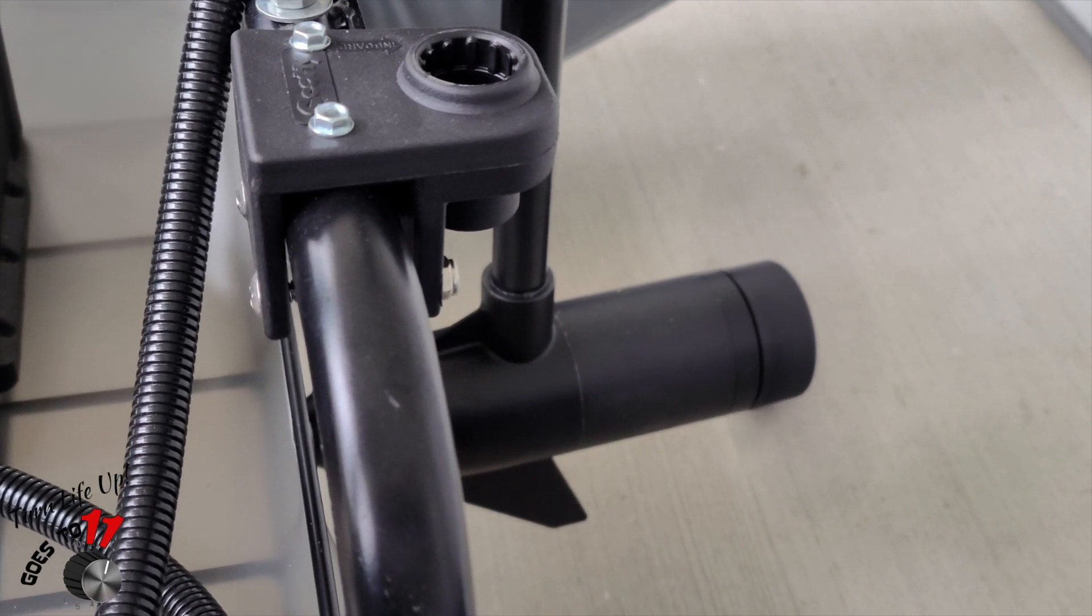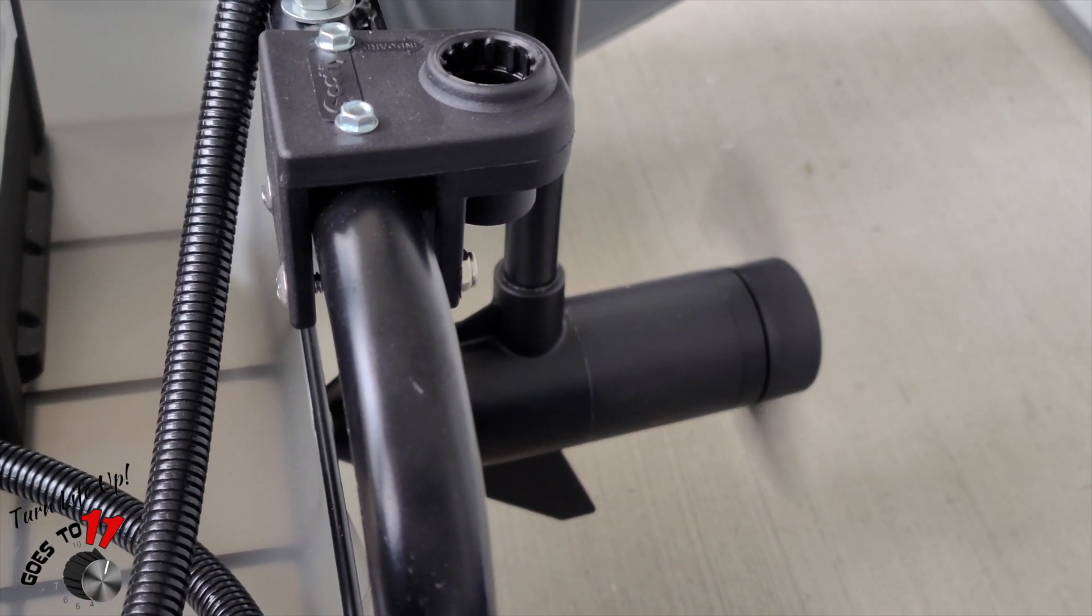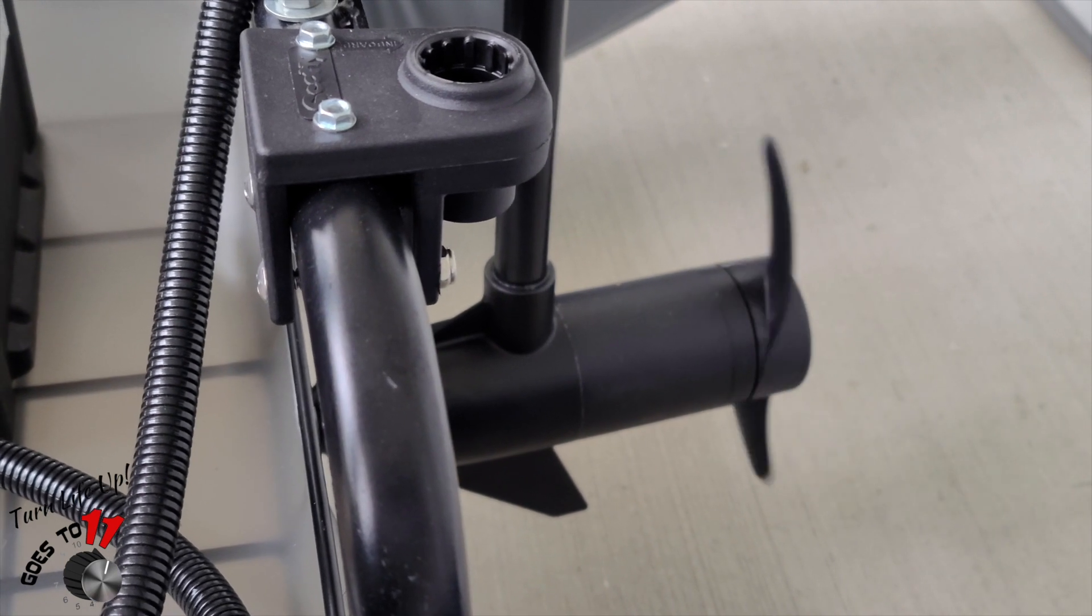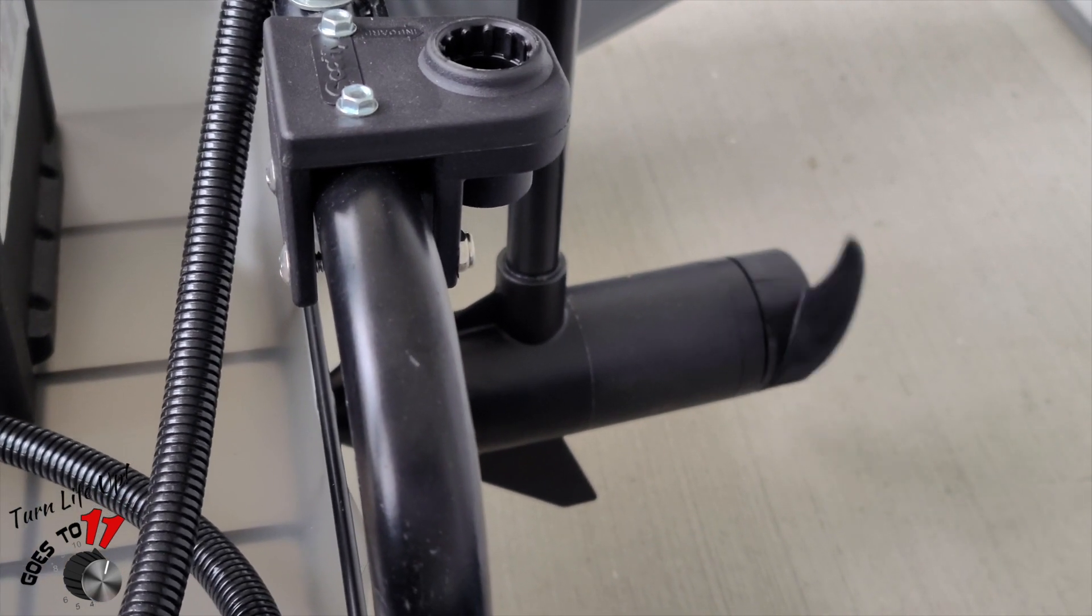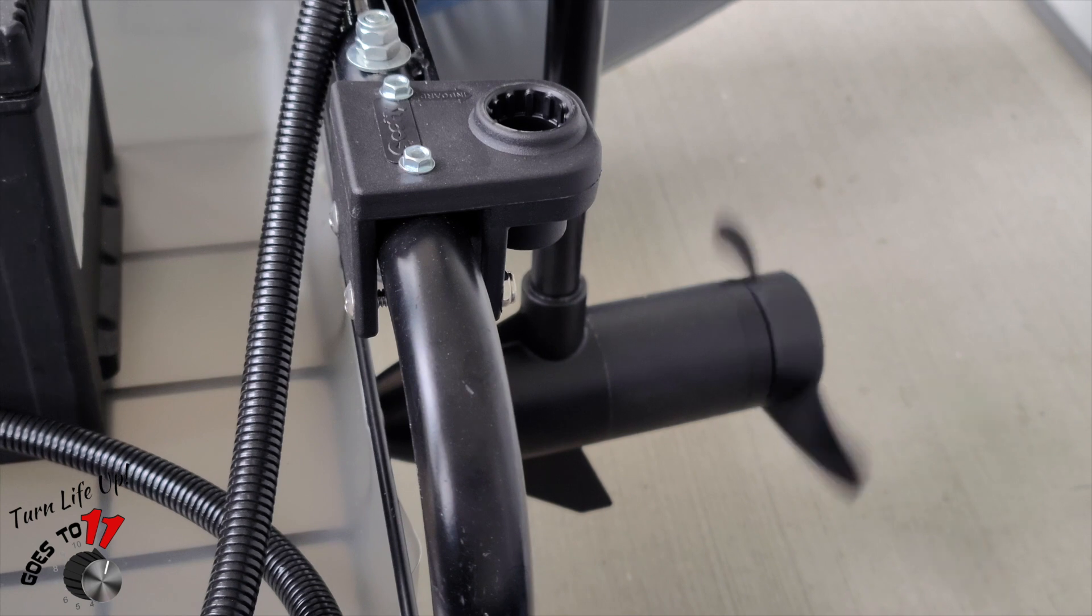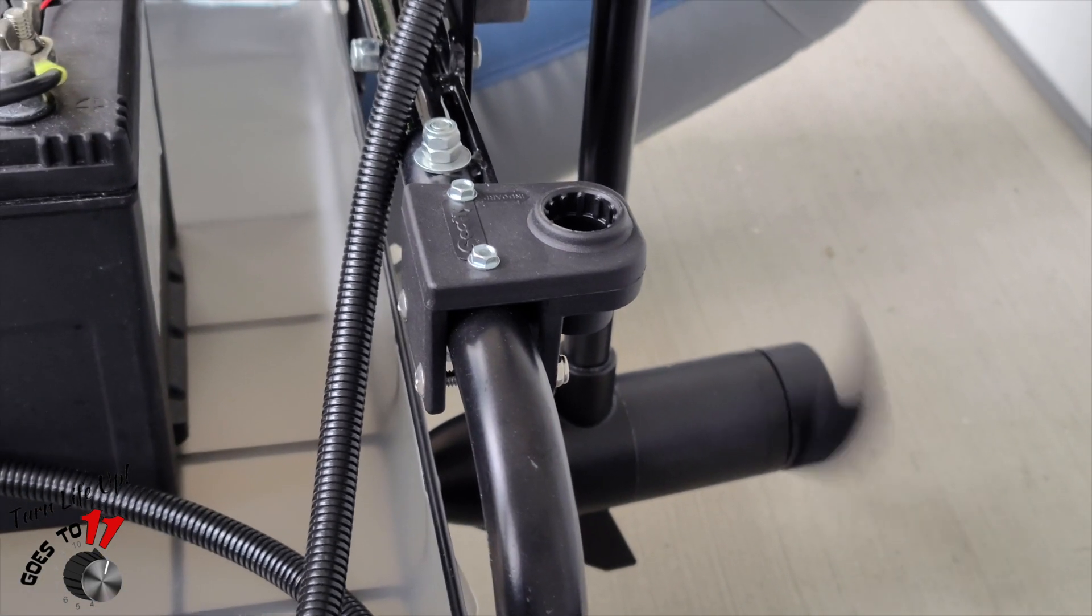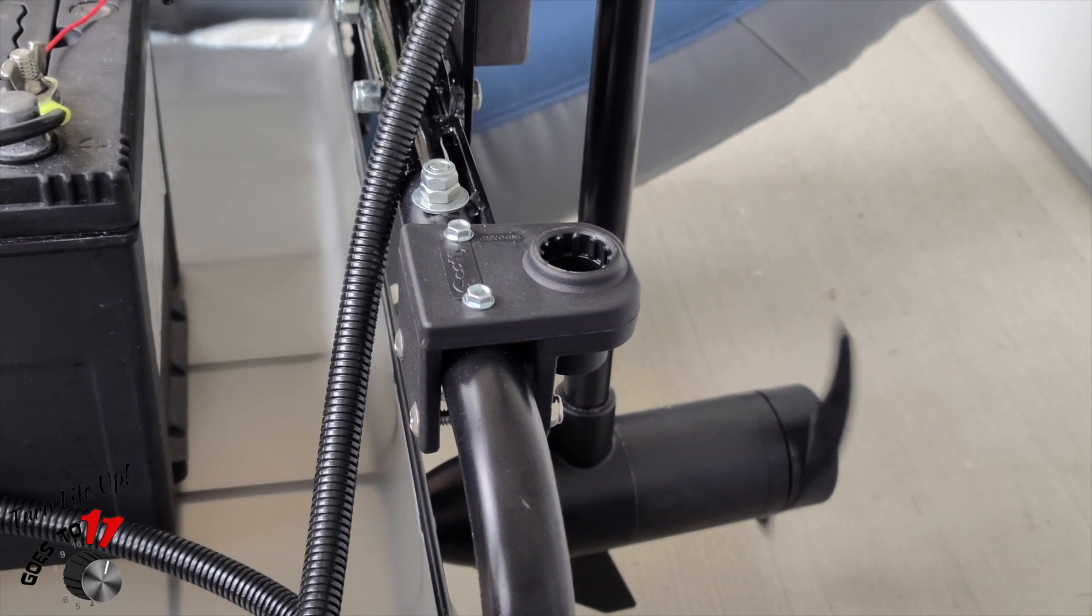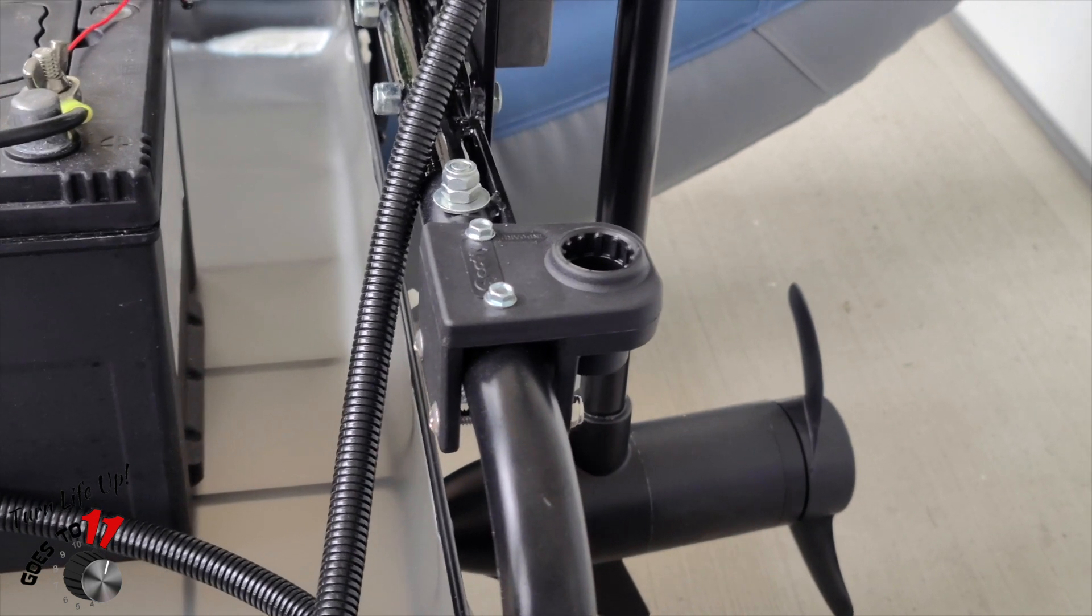All the way up to full. Now this is the Minn Kota, it's the C2, it's the 30 pound thrust, so we don't need to have a huge amount of power with this.